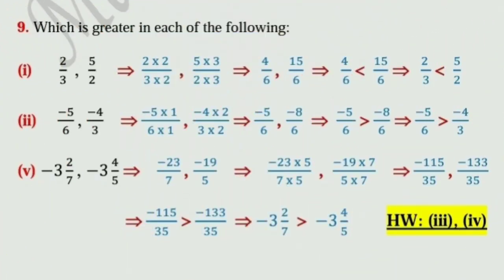Sum number 9: which is greater in each of the following? First one: 2 upon 3 and 5 upon 2. Multiply numerator and denominator of the first number by 2 — that is 2 into 2 upon 3 into 2 — and multiply 5 upon 2 by 3 — that is 5 into 3 upon 2 into 3 — giving 4 upon 6 and 15 upon 6. Since 15 is greater than 4, therefore 4 upon 6 is less than 15 upon 6, meaning 2 upon 3 is less than 5 upon 2.